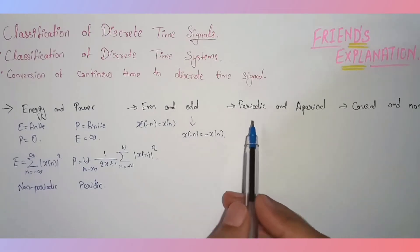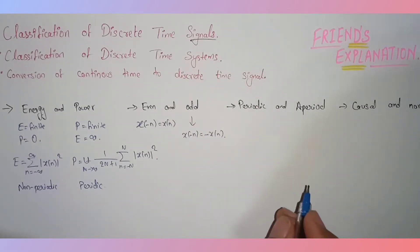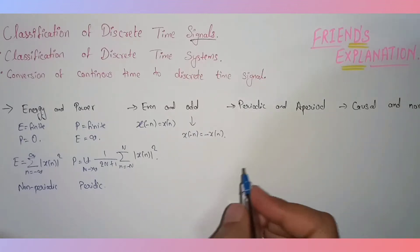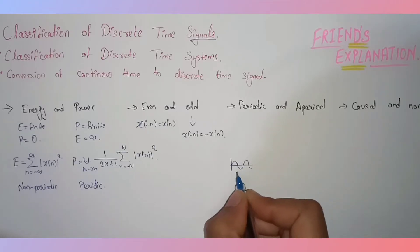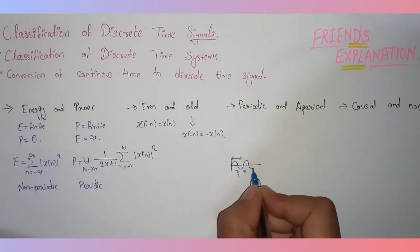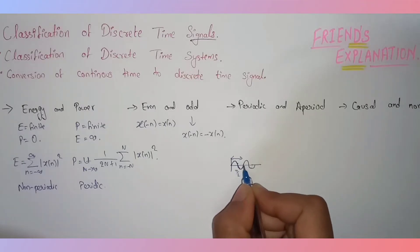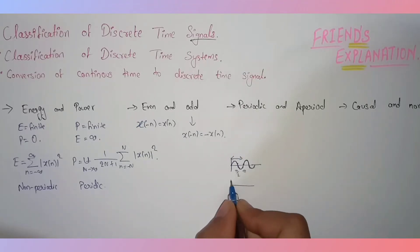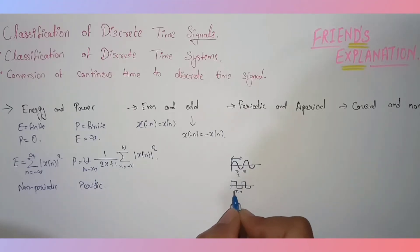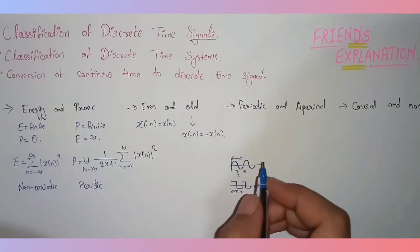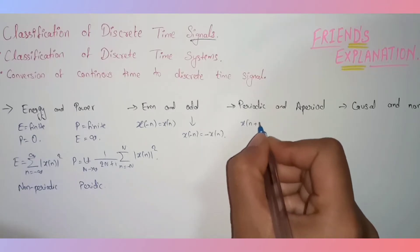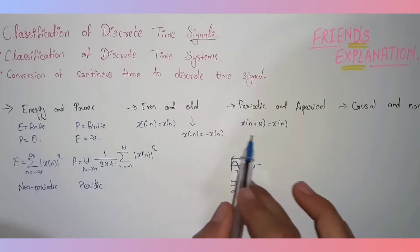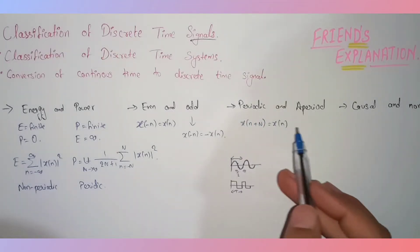A signal is periodic if and only if its pattern repeats after some interval of time. For example, a sine signal repeats after an interval of π. A square wave goes from +1 to −1 and repeats after a time interval T. The condition is written as x(n + N) = x(n). If it satisfies this condition it is periodic; otherwise it is aperiodic.